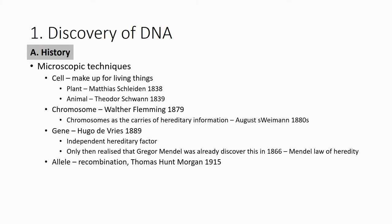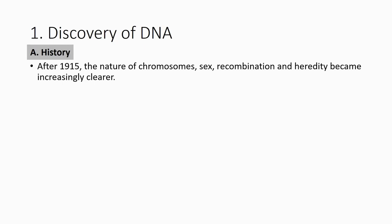In the early 20th century they started to understand more. First there was the gene, then understanding of different types — the nature of the chromosome, sex, recombination, and heredity became quite clear. They understood the relationship between these things and how genetic information is passed to the next generation. But they didn't really know what was inside — and this was just about 100 years ago, not too long ago.